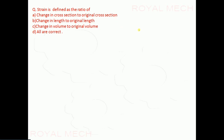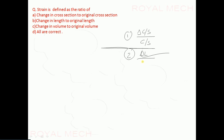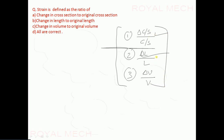Strain is defined as: the ratio of change in cross-section to original cross-section (ΔCS/CS), change in length to original length (ΔL/L), change in volume to original volume (ΔV/V), or all of the above. Strain covers all of these — change in cross-section, change in length, and change in volume by their respective original values. Therefore, option D — all of the above — is the correct option.